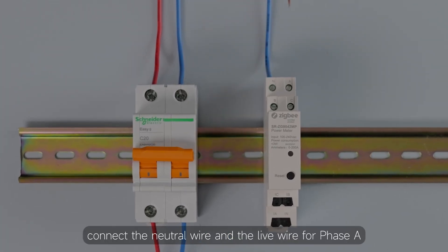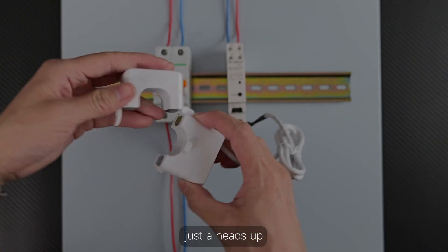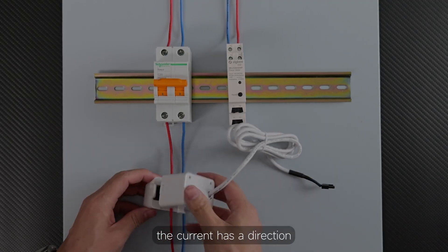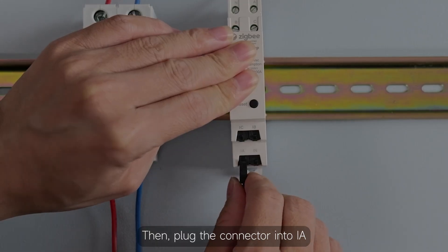To set it up, connect the neutral wire and the live wire for phase A. Make sure to thread the current transformer around the live wire. Just a heads up, the current has a direction so if it's wrong you can flip it if needed. Then plug the connector into IA.